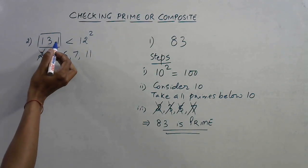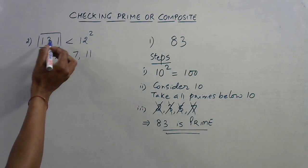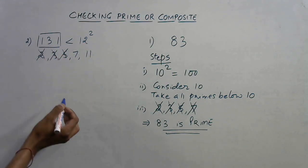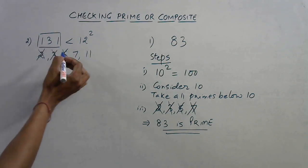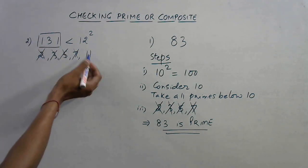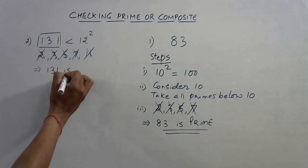1 plus 3, 4 plus 1, 5 - 5 is not divisible by 3, so this also ruled out. 5, obviously it is not divisible by 5 because the number is not ending with 0 or 5. 7, 1 is 7, so 61 not divisible again. 11, 11 and 21 not divisible again. That means 131 is prime.